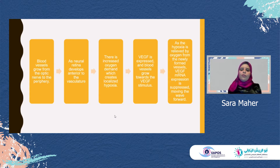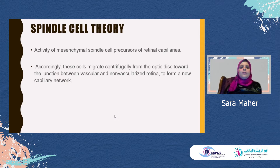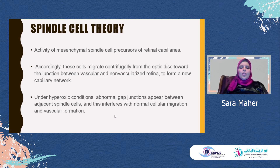There are two theories that explain the pathogenesis of ROP: the classic theory of hyperoxia, and the spindle cell or gap junction theory. As regarding the spindle cell theory, the activity of the mesenchymal spindle cell precursors of the retinal capillaries — these cells migrate centrifugally from the optic disc toward the junction between the vascularized and non-vascularized retina or capillary network. Under hyperoxic conditions, abnormal gap junctions appear between adjacent spindle cells, and this interferes with normal cellular migration and vascular formation.